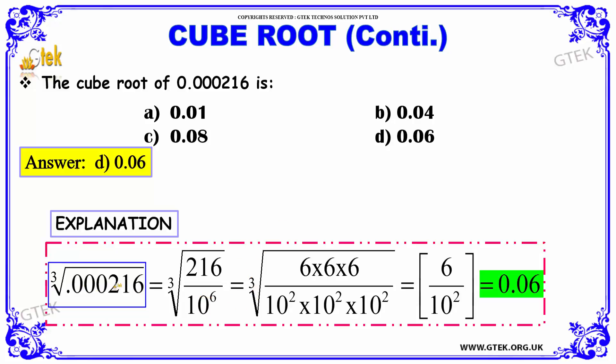Since the decimal point is before 6 decimal places, 10⁶. Which is equal to cube root of 216 can be written as 6 × 6 × 6 by 10² × 10² × 10².